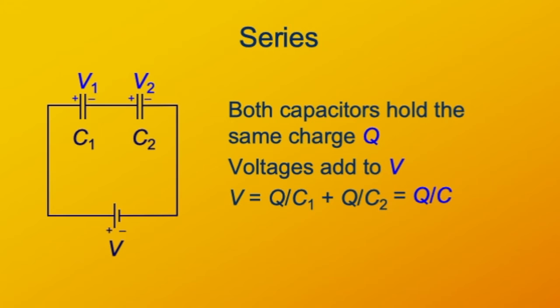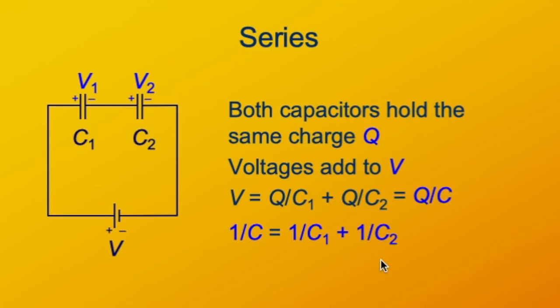If we just take the expression Q over C1 plus Q over C2 equals Q over C, and divide by Q, the reciprocal of the equivalent capacitance is the sum of the reciprocals of the individual capacitances. So when capacitors are in series, the reciprocals of their capacitances add to give the reciprocal of the equivalent capacitance.